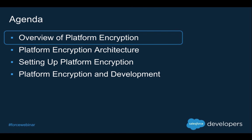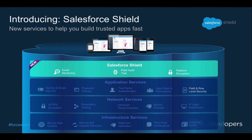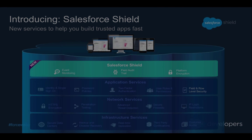Let's get started with our overview of platform encryption. We've bundled up a set of features around compliance and security in your orgs, and we've called them Salesforce Shield. These are comprised of event monitoring, which allows you to watch for certain events in your system; the new field audit trail feature, which is an enhancement to the existing field history tracking feature; and, of course, our topic today: platform encryption. Any of these features are available as independent features or bundled together as Salesforce Shield.